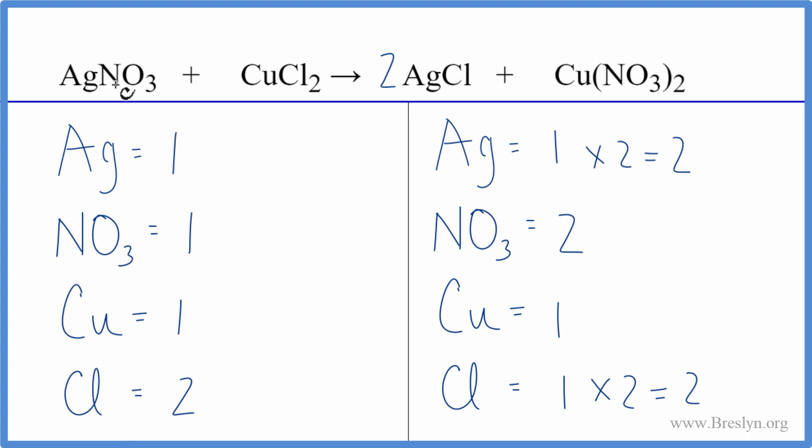So we have two here and one here. We'll put a coefficient of two in front of the AgNO3. We have one times two. That'll give us two silver atoms. Those are balanced. And then one nitrate times the two, and that gives us two nitrates. And we're done. This equation is balanced.